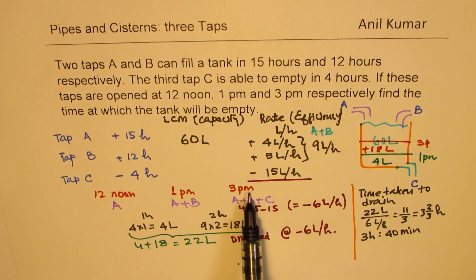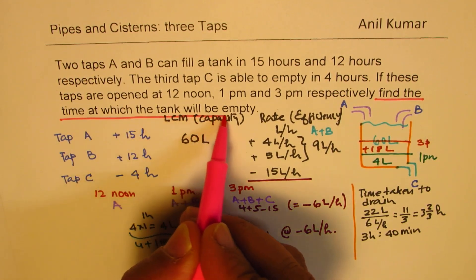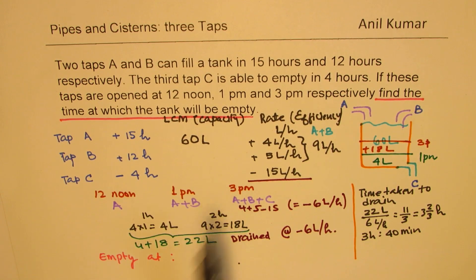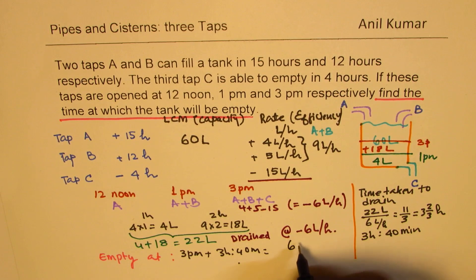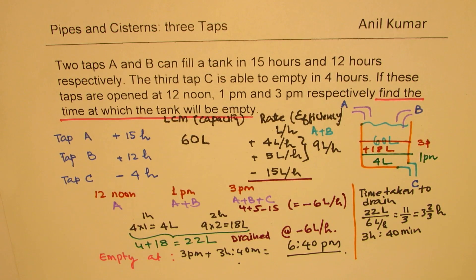So after 3 p.m., it takes 3 hours, 40 minutes to drain. So now the question here is, find the time at which the tank will be empty. So it will be empty at what time? At 3 p.m., we started draining and took 3 hours and 40 minutes. So it is 3 p.m. plus 3 hours and 40 minutes. So that means 6:40 p.m. So at 6:40 p.m., the whole tank will be empty.